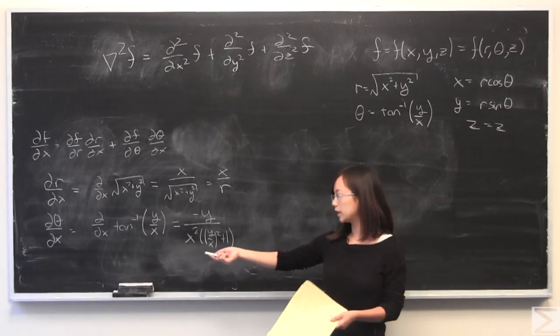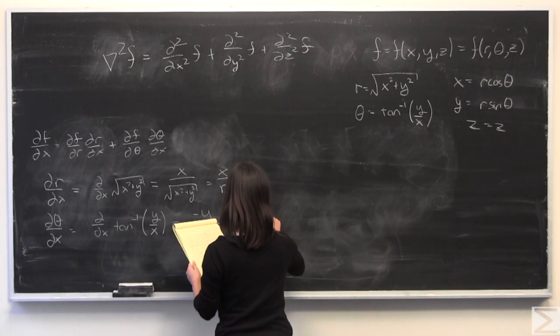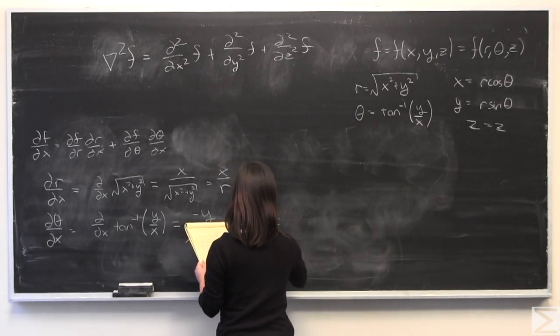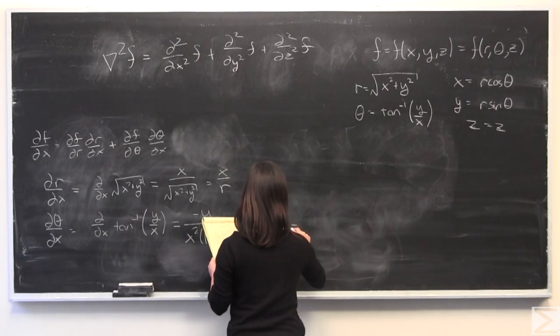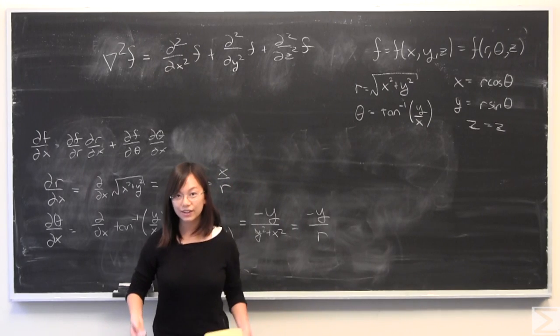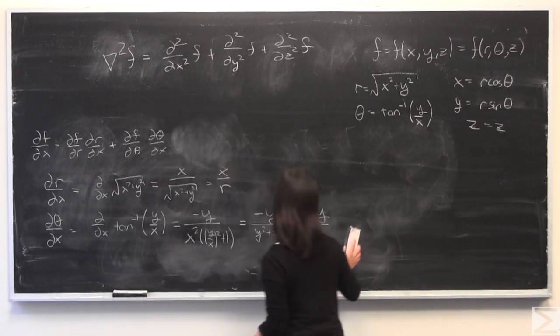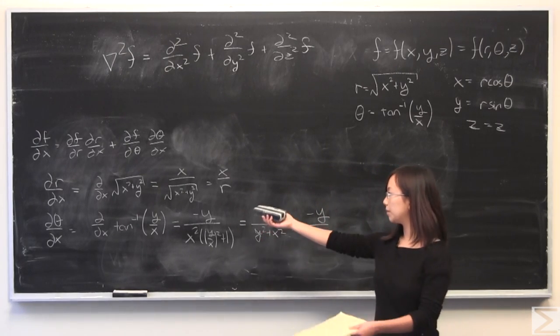Theta is a little more tricky, but it's still very doable. It evaluates to this, which simplifies to negative y over y squared plus x squared. You can remake that as negative y over r squared. That's all you need for the first partial derivative. I'm going to rewrite this by plugging in these two.